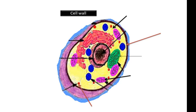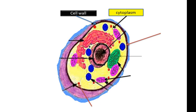This membrane separates the cell from its surrounding environment, and it is composed of a double bilayer of lipids. Another structure is the cytoplasm — this is the basic ground of the cell where all the organelles swim.